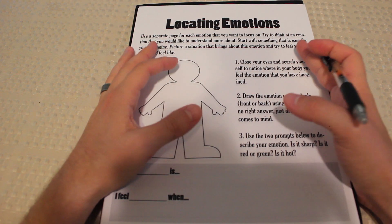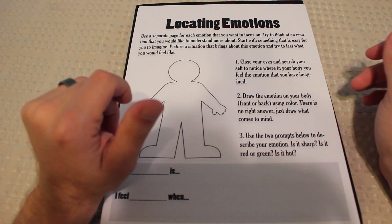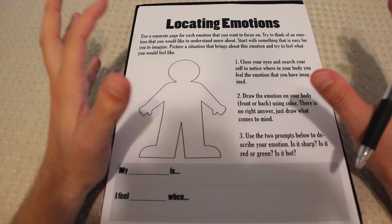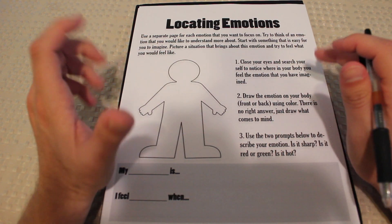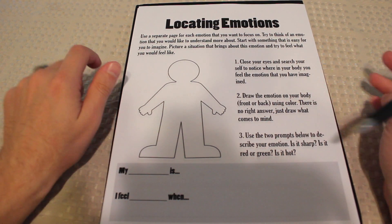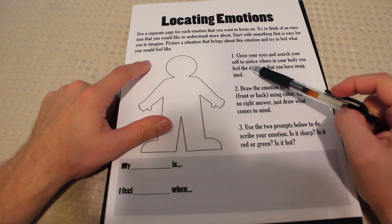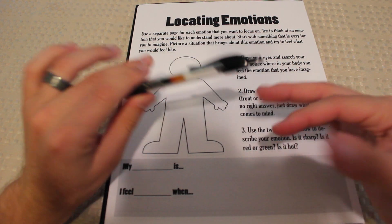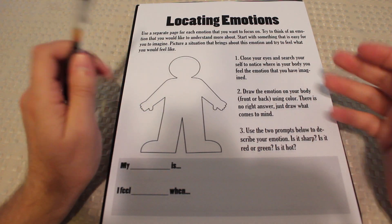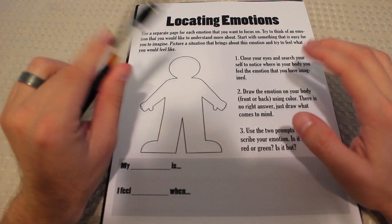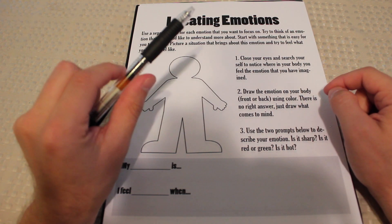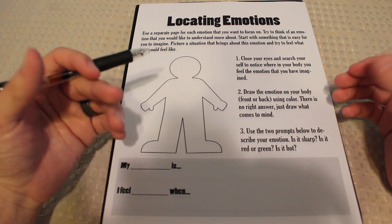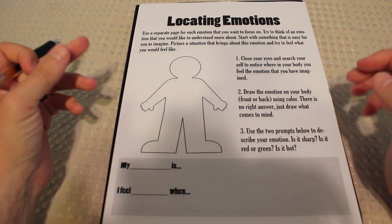So I'll read through the directions here. And I wrote these myself, and I just wrote them, so I apologize if there's any typos or anything like that. But I just put here, use a separate page for each emotion that you want to focus on. Try to think of an emotion that you would like to understand more about. Start with something that is easy for you to imagine. Picture a situation that brings about this emotion and try to feel what you would feel like. So this is combining a little bit of exposure to that emotion. You're not going to be in a position necessarily where you are truly experiencing a firsthand sort of being hit by that emotion. But this is asking you to imagine a situation that would bring about that emotion.